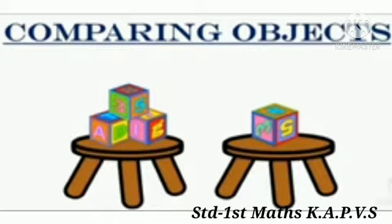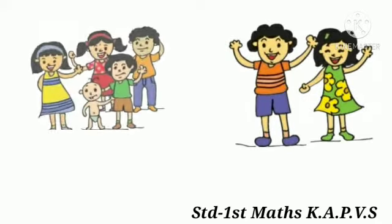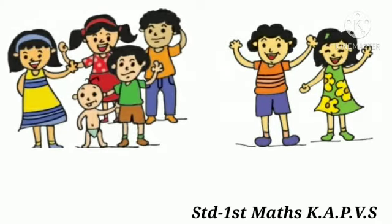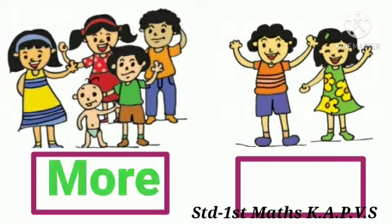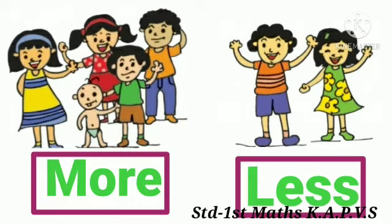To make the concept easier to understand, we have a picture. Students, look at this picture. In the first picture, there are more children than the second picture. The second picture has less children than the first picture. First picture has more children and the second picture has less children.